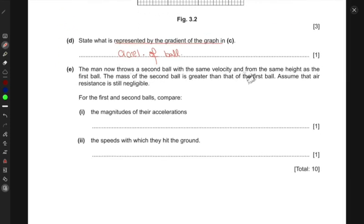Now the man throws a second ball with the same velocity and from the same height as the first ball. The mass of the second ball is greater than that of the first ball. So the second ball has a bigger mass. Assume air resistance is still negligible. For the first and second balls, compare the magnitudes of their acceleration. Now the acceleration is just due to gravity. And we know that this acceleration due to gravity is independent of the mass. Because you know, we have f is equal to mass times acceleration. And the force of gravity is basically GMm by r squared. And then you have equals to this, using Newton's second law, m times a. Let's call it mg now for acceleration due to gravity. The small mass m cancels out. So the mass of the ball, increasing the mass of the ball itself is not going to have any effect on the magnitudes of the acceleration. So they remain the same.